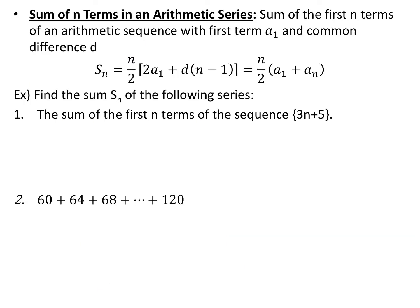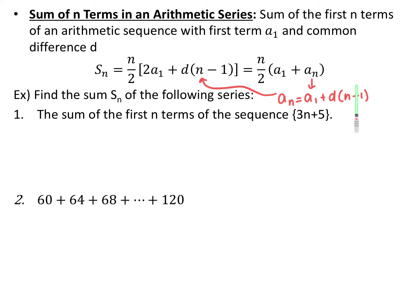For the sum of an arithmetic series — covered in 12.1 — the sum of the first n terms of an arithmetic sequence with first term a sub 1 and common difference d works out to be the area of a trapezoid: S sub n equals (n over 2) times (a sub 1 plus a sub n). If you don't know your last term, use your explicit formula to find it, which gives the alternative form using twice a sub 1 plus d times (n minus 1).